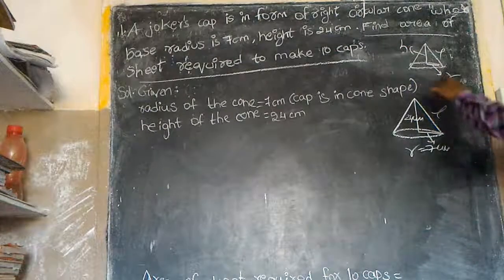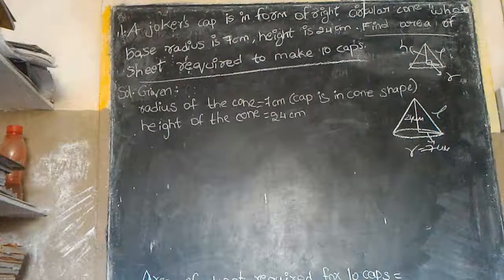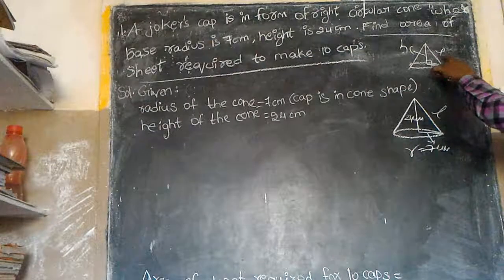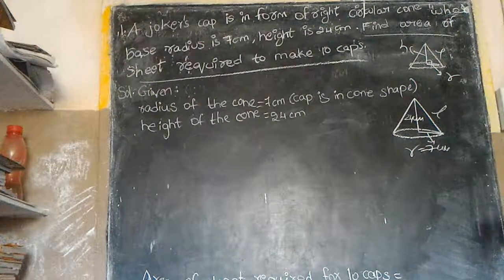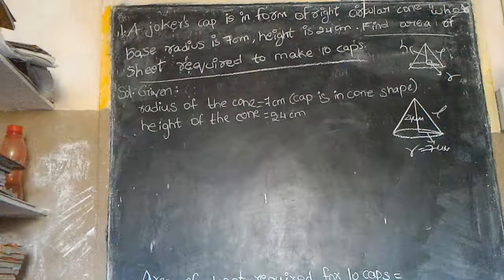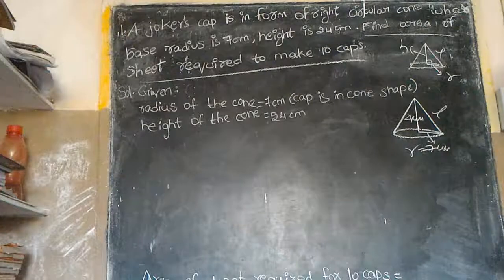If we draw the right angle triangle, we can see that L² equals H² plus R². Right angle triangle, hypotenuse square is equal to sum of the squares of the other two sides.